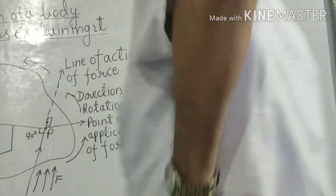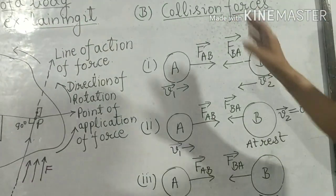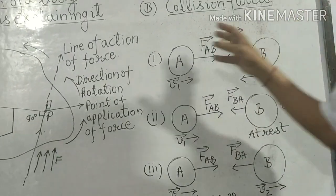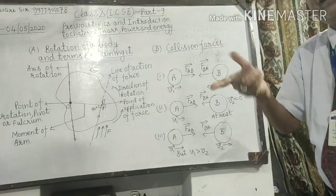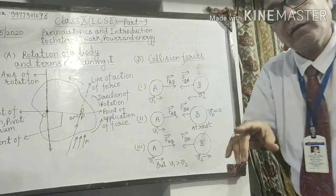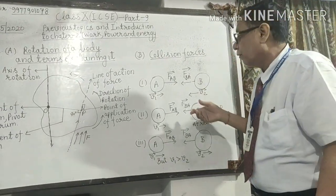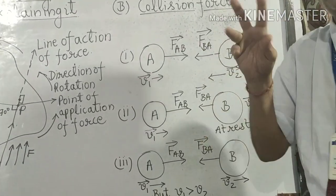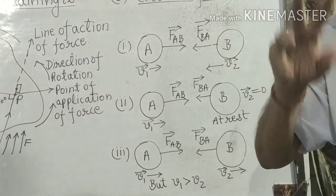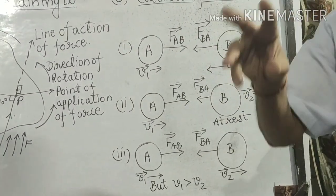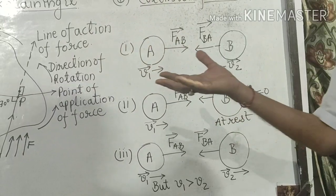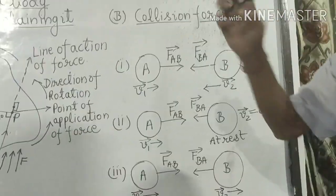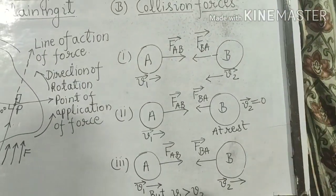For collision forces, you should remember that these collision forces always appear in pair. And for collision, there should be at least two bodies — more than two — then they will create the pair and they will interact with one another.